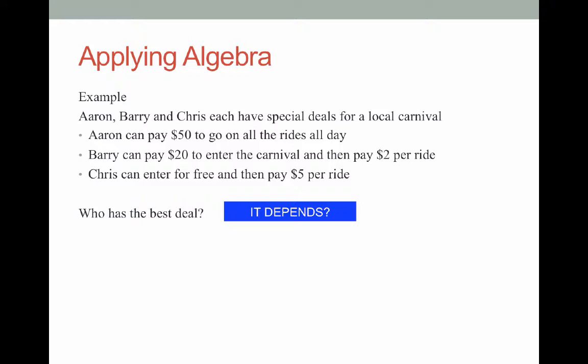But what we're going to do is we're going to take a look at this algebraically and we're going to write out some formulas or some patterns. Let's take a look at their costs. Let's take Aaron for example. Aaron can pay $50 and go on all the rides all day. This means that he will pay $50 and then that will be it. There will be no increase or decrease to his cost.